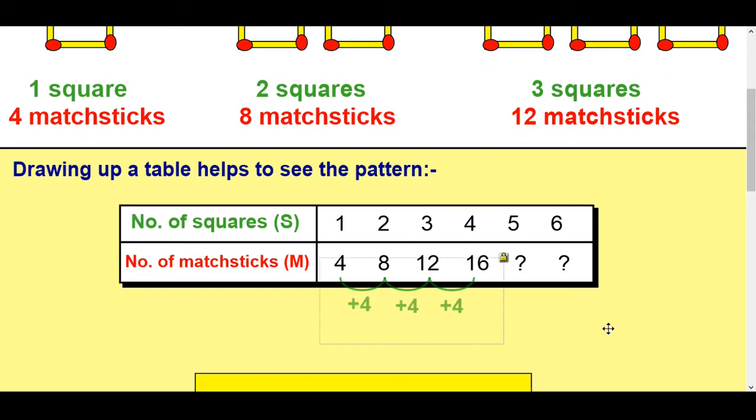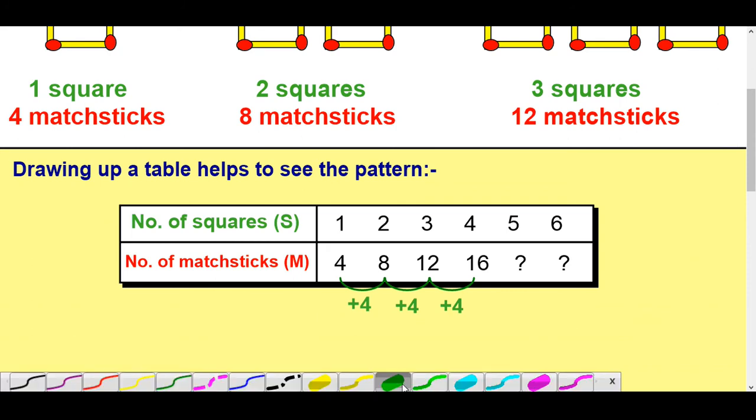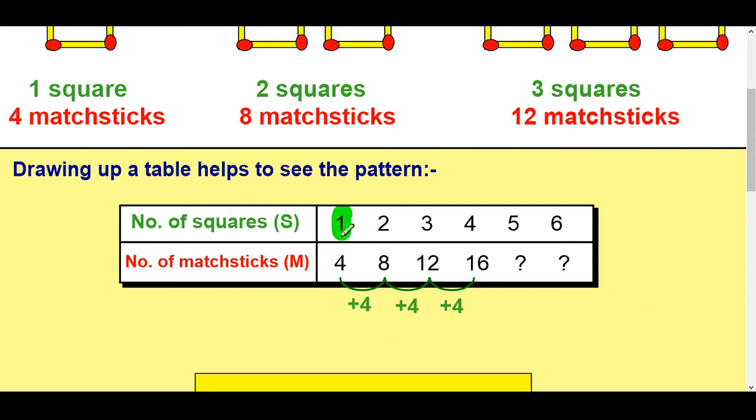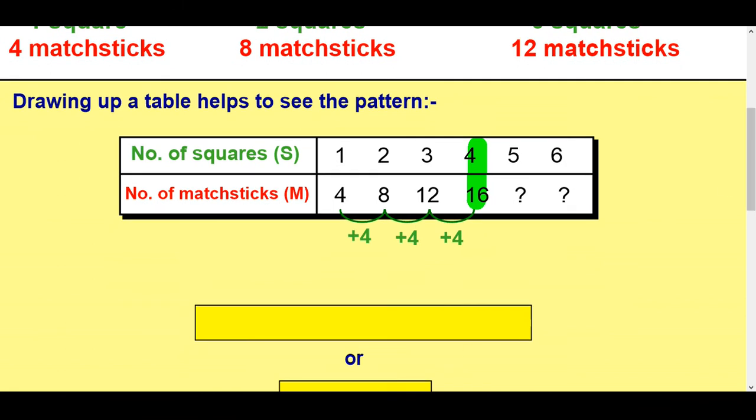So you can come to this conclusion that you're adding on 4 each time but the more powerful way to look about it is to look down the way. What's happening down the way? How did you get from 1 to 4 and 2 to 8 and 3 to 12 and 4 to 16? You should be able to spot that you're timesing by 4. So whatever it's going up in is what we multiply by. So let's get our formula.